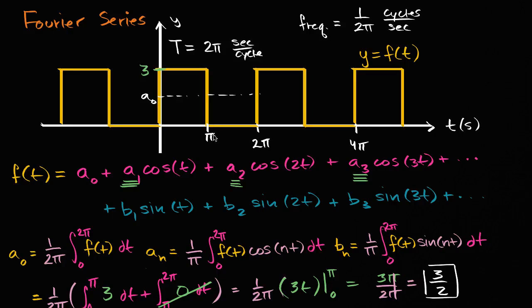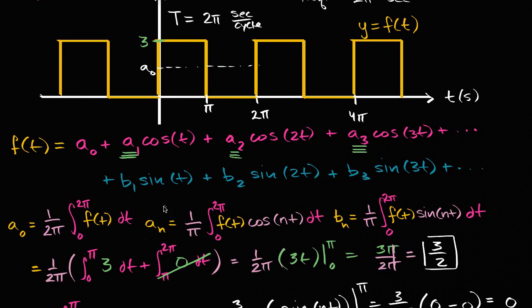So we started with a square wave that had a period of 2π. Then we said, can we represent it as an infinite series of weighted sines and cosines? And working from that idea, we were actually able to find expressions for the coefficients: a sub zero, a sub n when n does not equal zero, and the b sub n's.